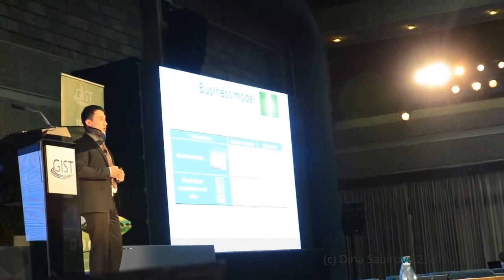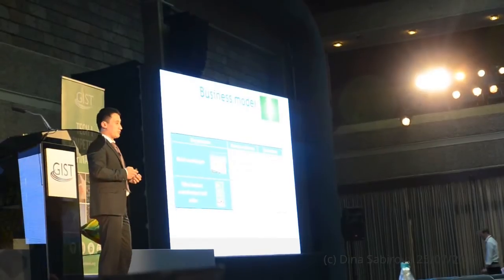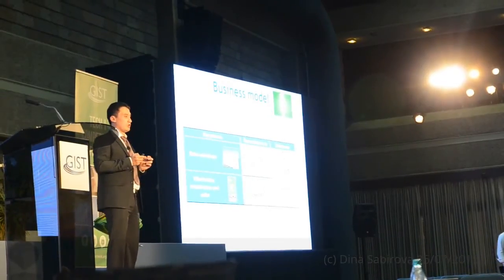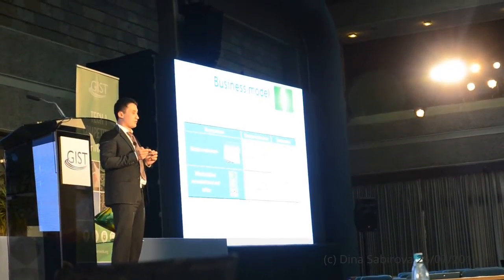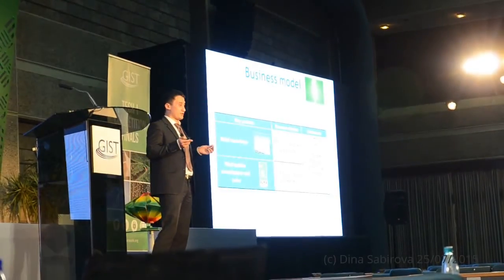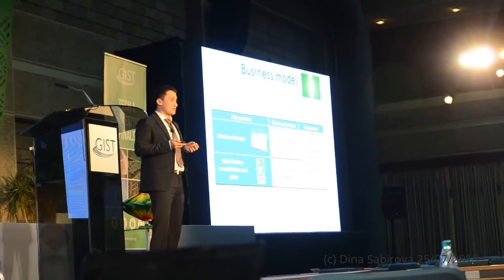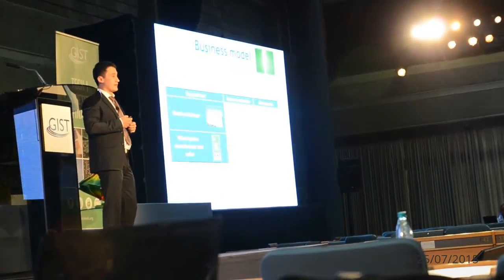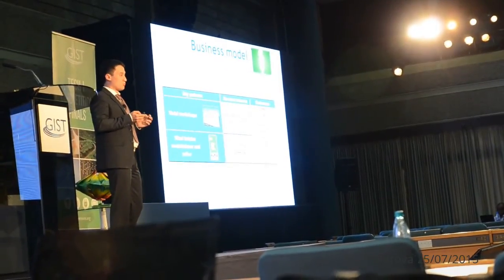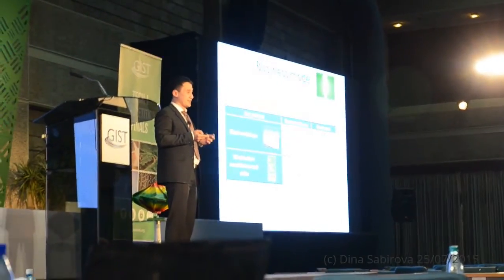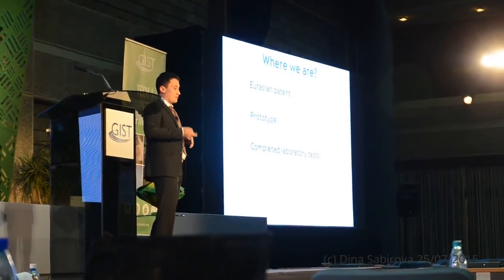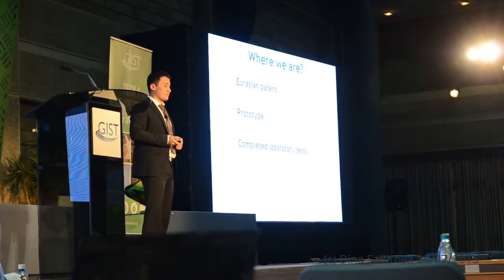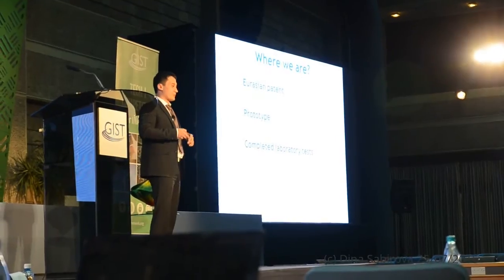We have a business model with two key revenue sources. First is to manufacture the turbines with local metal workshops, because we know the market. The second is to make a profit-share agreement with overseas leaders in manufacturing. We have signed a memorandum of understanding with Alcar Group, a leading manufacturing company in Turkey. We have made a prototype and completed laboratory tests. Now we're going to invest $80,000 to complete the technology.